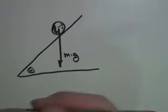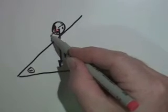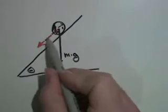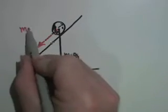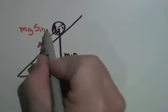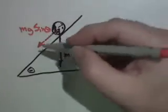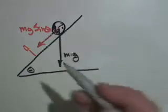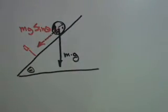Part of its weight will tend to move it along the ramp. The component that tends to move it is mg sine of theta. I sometimes remember that because if you've been moving, you sometimes see signs along the way. So the movement component is the sine component.